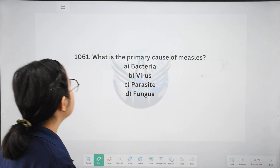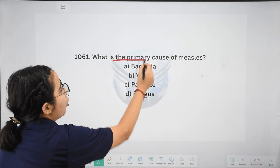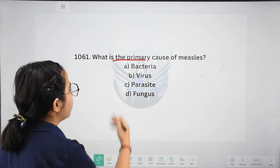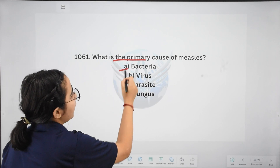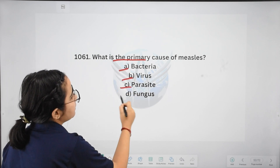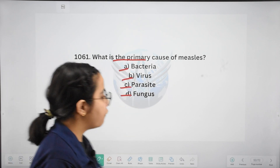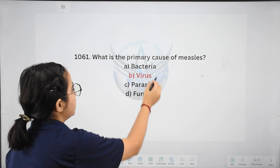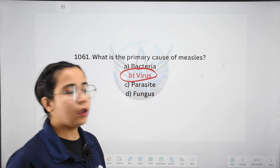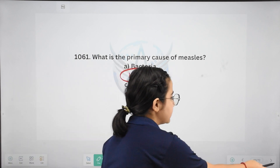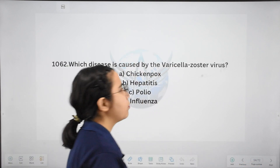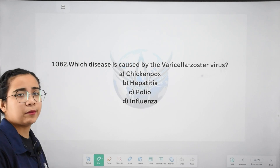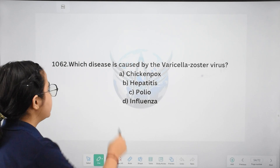Next: what is the primary cause of measles? Options: bacteria, virus, parasite, or fungus. The right answer is virus.